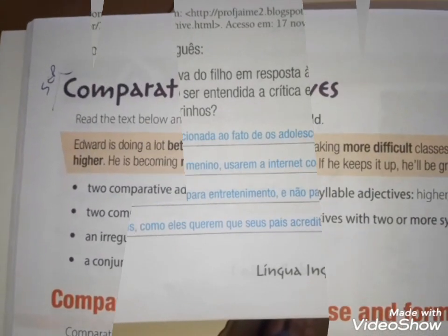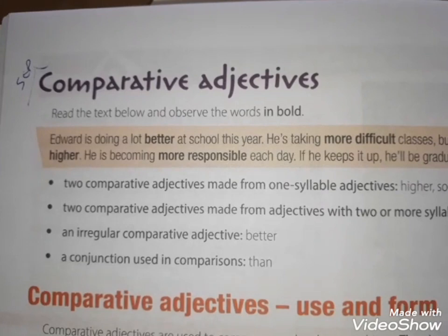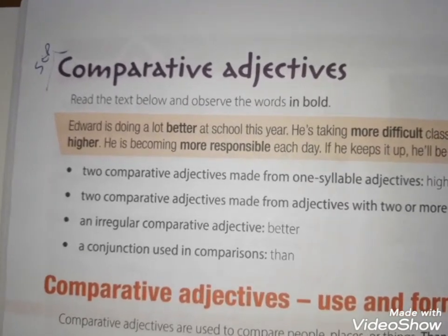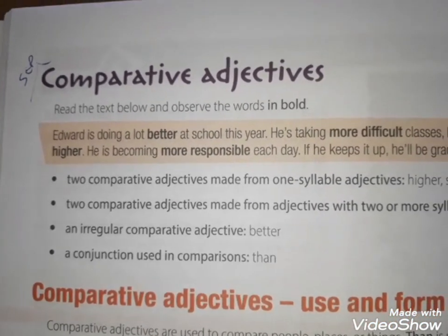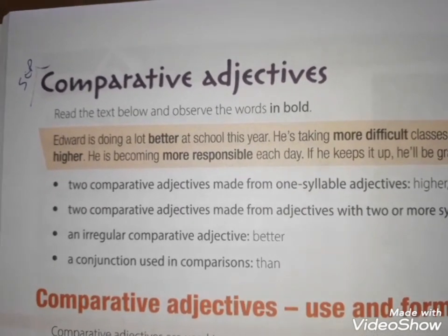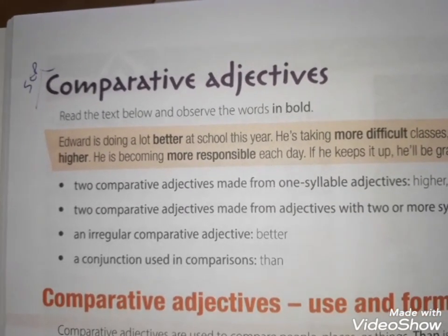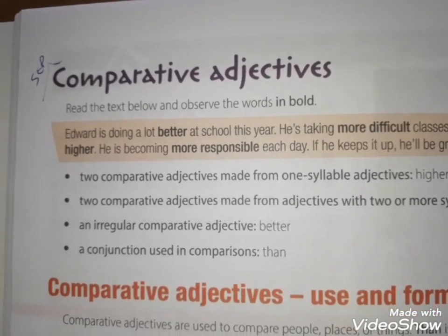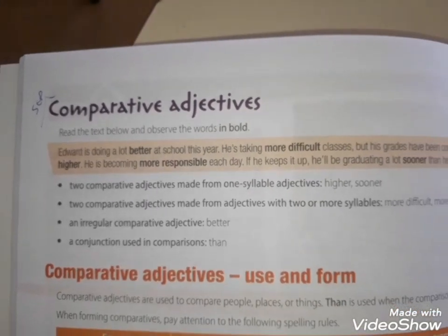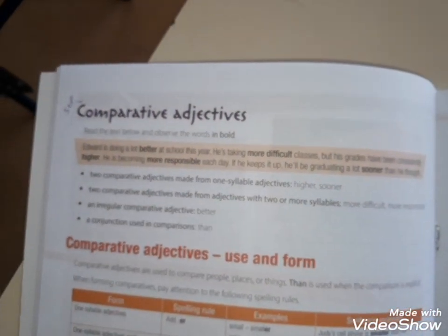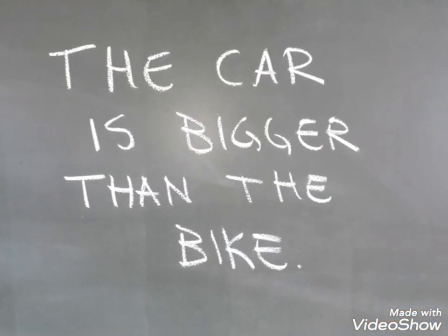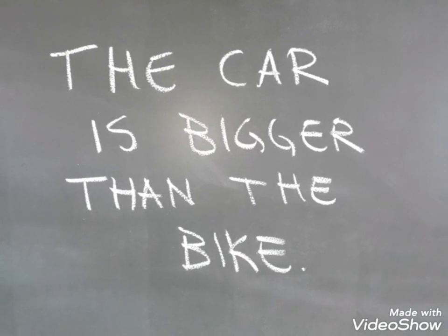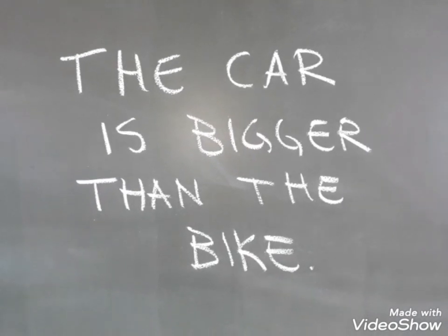E hoje estamos nos adjetivos comparativos — comparando duas coisas. O carro é maior que a bicicleta. Vamos ver como fica essa frase aí: o carro é maior que a bicicleta.